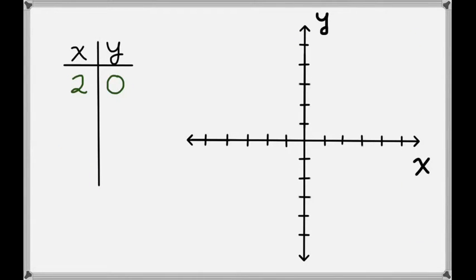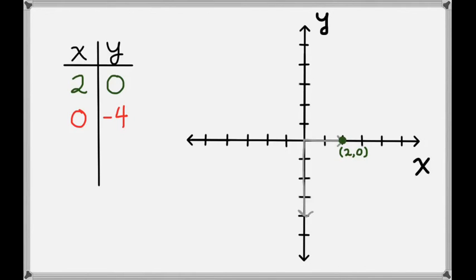But what happens when either the x-value or the y-value is 0? Let's consider the point (2, 0). Since we have an x-value of 2, we'll go to the right by 2, but the y-value is 0, so we don't go up or down at all — our point is right on the x-axis. Now what if x is 0, like with the point (0, -4)? Since our x-value is 0, we don't go left or right at all, and our y-value is -4, so we'll go down 4. This is the point (0, -4).